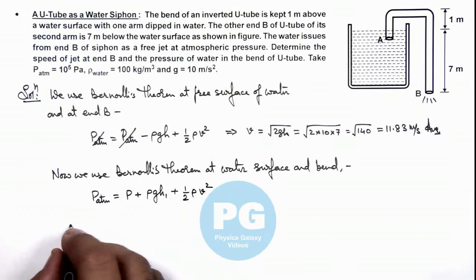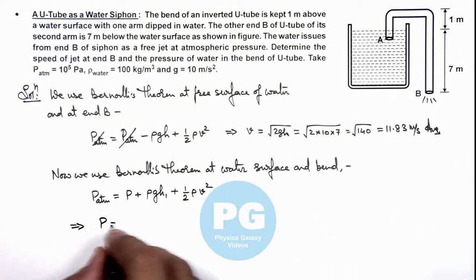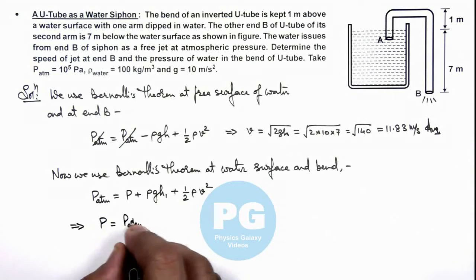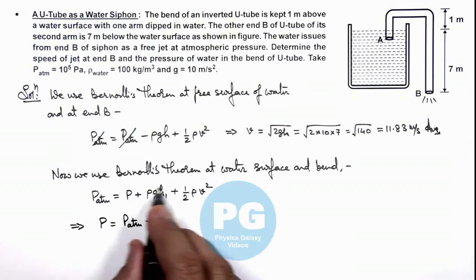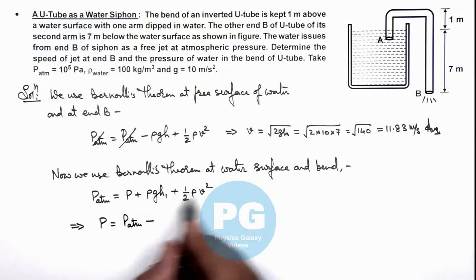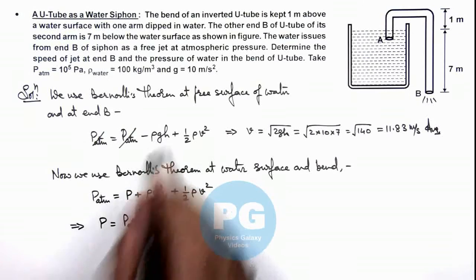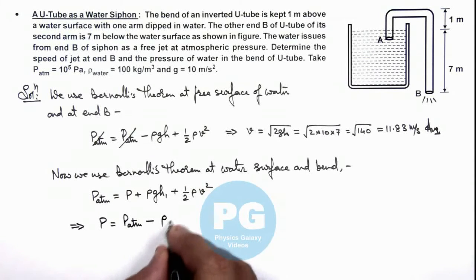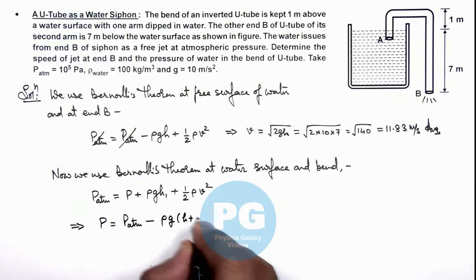So this gives us the value of pressure in the bend, that is P atmospheric minus—when we subtract half ρv², we can write it as ρgh. So this will be ρg(h + h₁).